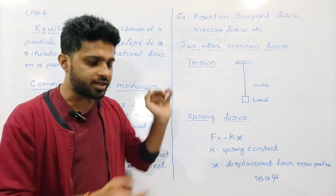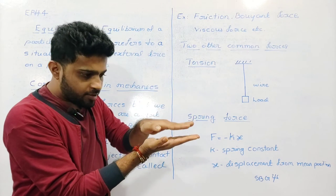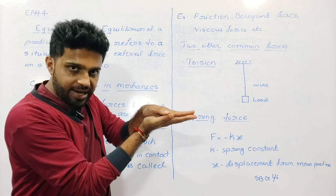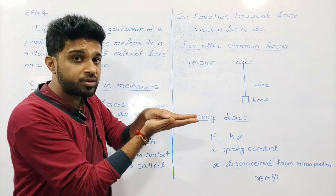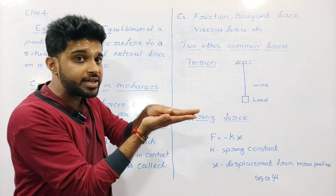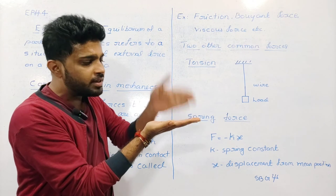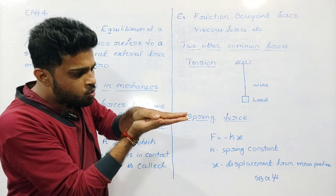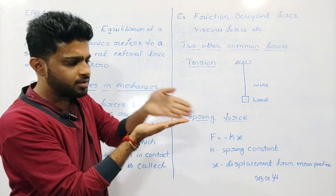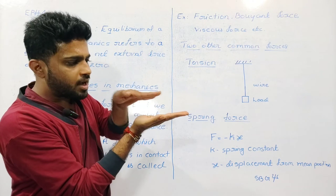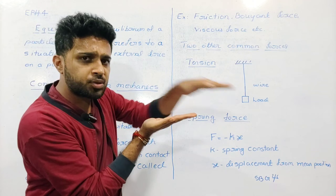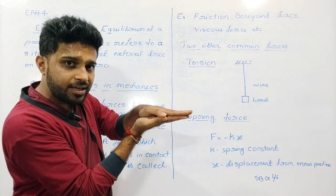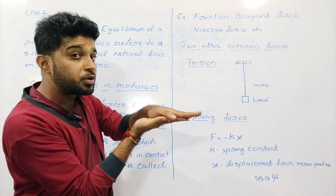Consider this object and this object — two objects. When a force is applied and the object tends to move or moves on a surface, friction is generated.